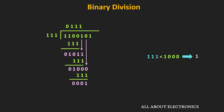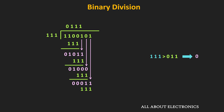We bring down the next bit of the dividend, which is 1. Comparing 011 with 111: since 011 is less than 111, we cannot perform the subtraction, so in the quotient we write 0. Since we have covered all the bits of the dividend, this is our final quotient and remainder.